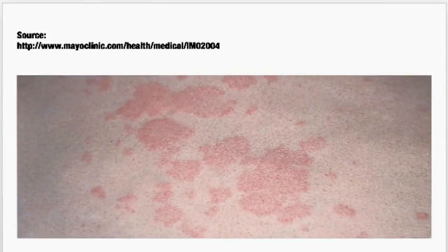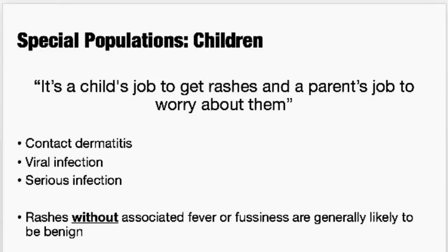A little bit about special populations — pregnancy and kids. For kids: it's a child's job to get a rash, and it's the parent's job to worry about them, and then it's your job to reassure the parents. Most rashes in kids are going to be contact dermatitis or a viral infection. Rashes that are going to be serious are usually associated with high fever and fussiness. There's a common pattern where a small child develops a high fever, the fever goes away, and then the rash shows up — those are the common viral exanthems. Generally speaking, rashes without fever or fussiness are benign — contact dermatitis, eczema, things like that.